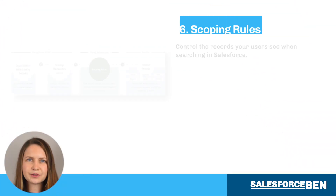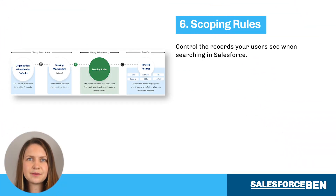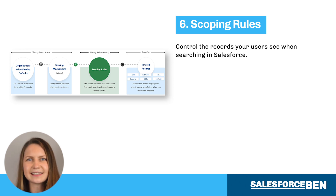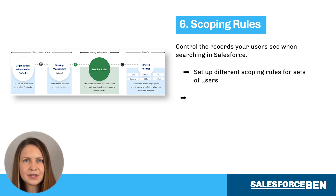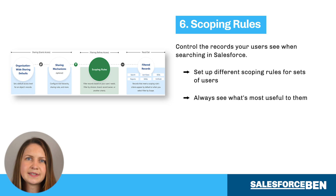Control the records your users see when searching in Salesforce with scoping rules, now generally available following a successful beta. You can set up different scoping rules for sets of users, so users always see what's most useful to them and therefore can access records faster.